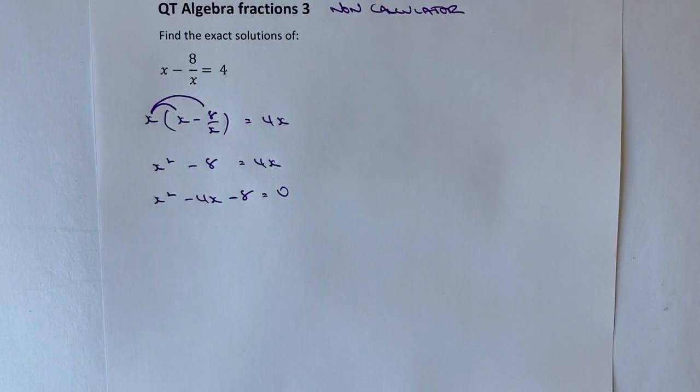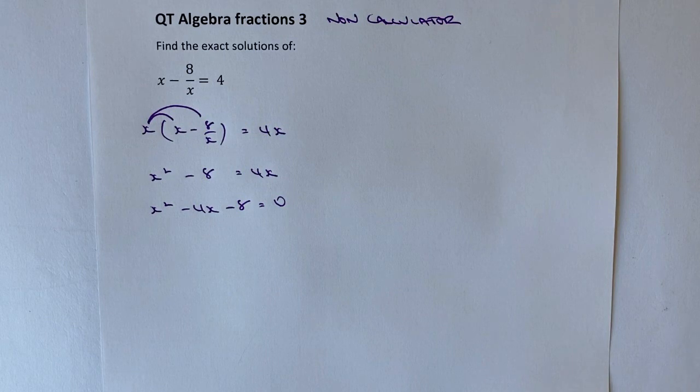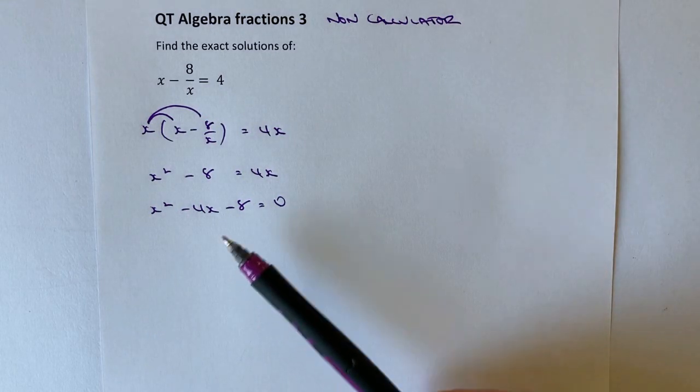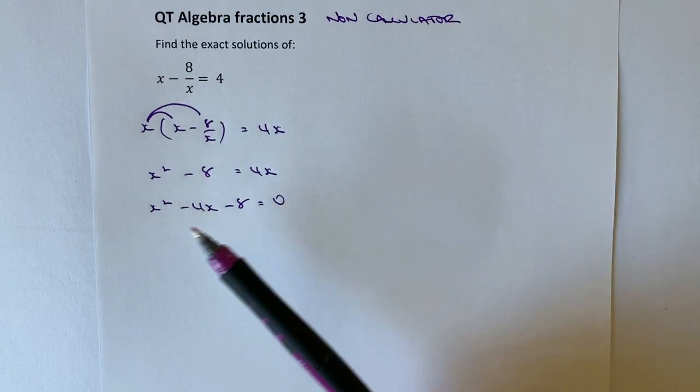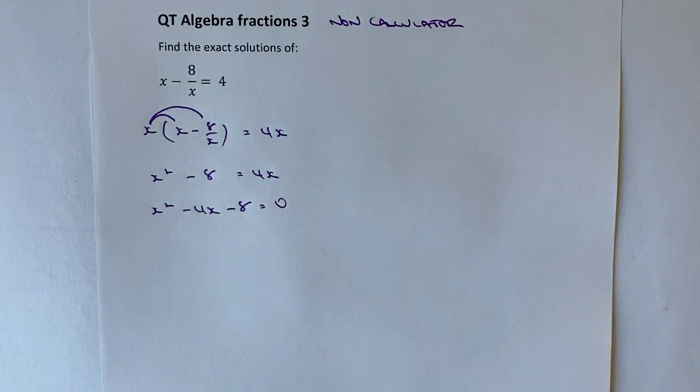So what's going through my mind at the moment is can I solve that by straightforward factorizing? In other words, are there two numbers that when I multiply them together make minus 8, and I add them together to make minus 4? Well, there aren't. Unfortunately. So I've got two choices here.